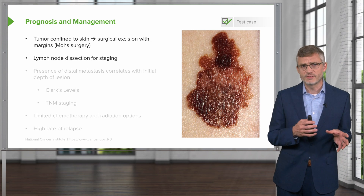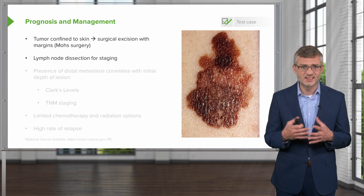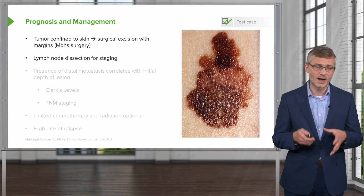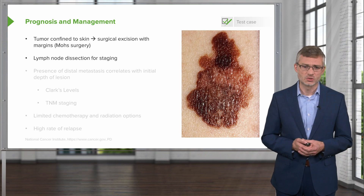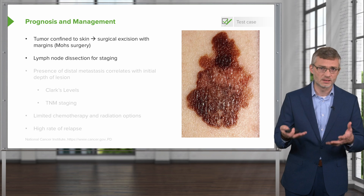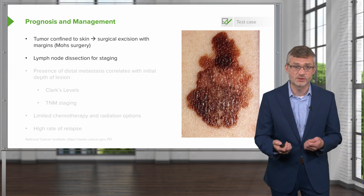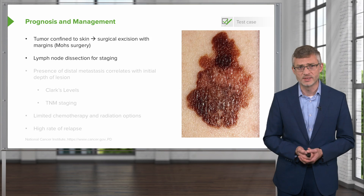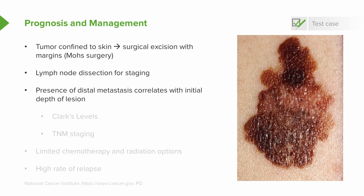The likelihood of lymph node involvement is entirely dependent upon how deep the initial lesion is. You're almost always going to assess the most proximal lymph nodes to see if there's any evidence of tumor involvement, which helps with staging. The presence of distal metastasis correlates with the initial depth of the lesion. Once the tumor penetrates into the dermis, you're very likely to have proximal nodes involved or even metastasis somewhere else in the body.